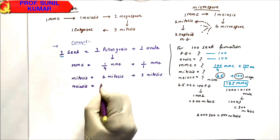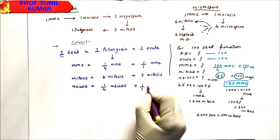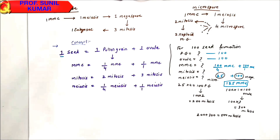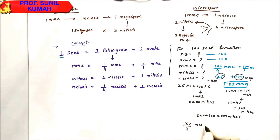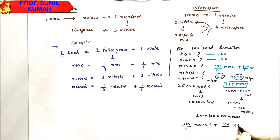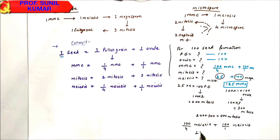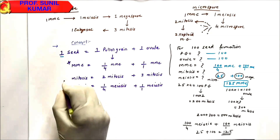For meiosis: one pollen grain requires 1/4 meiosis in male; one ovule requires 1/1 meiosis in female. For 100 seeds: 100 ÷ 4 = 25 meioses for pollen grain, plus 100 ÷ 1 = 100 meioses for ovule. Total = 25 + 100 = 125 meioses required. This is straightforward once you know the concept for seed formation.